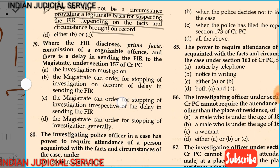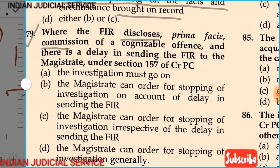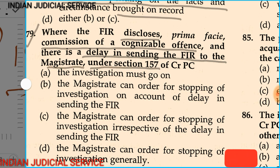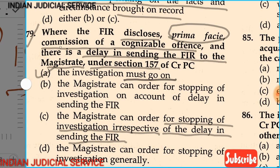Question 79: Where the FIR discloses prima facie the commission of a cognizable offence and there is a delay in sending the FIR to a magistrate under section 157 — must the investigation go on, can the magistrate order stopping of investigation on account of delay in sending the FIR, or can the magistrate order stopping irrespective of delay? The answer is option A — the investigation must go on, since the FIR prima facie discloses commission of a cognizable offence.